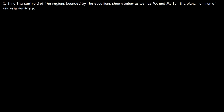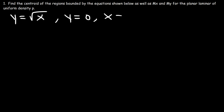In this video, we're going to talk about how to find the location of the centroid of the region bounded by the equations shown below. We're going to start with the region bounded by y equals the square root of x, y equals 0, and x equals 4. We're also going to determine the moment about the x-axis and the moment about the y-axis, given a planar lamina with uniform density rho.